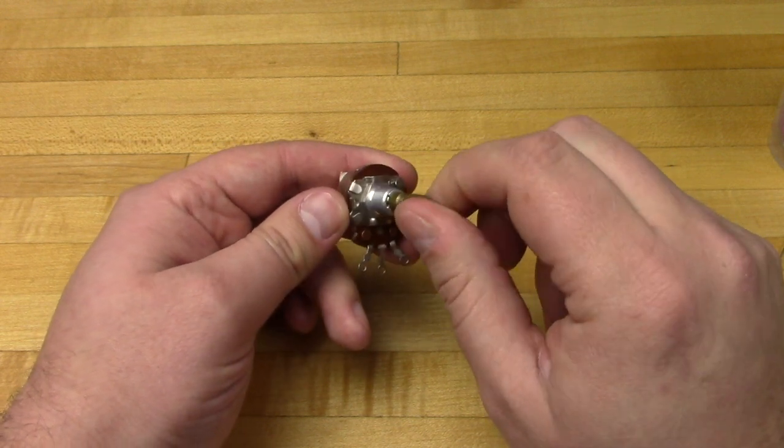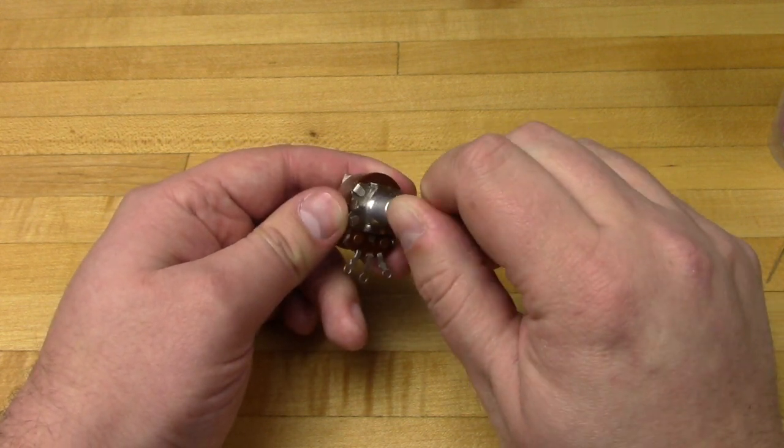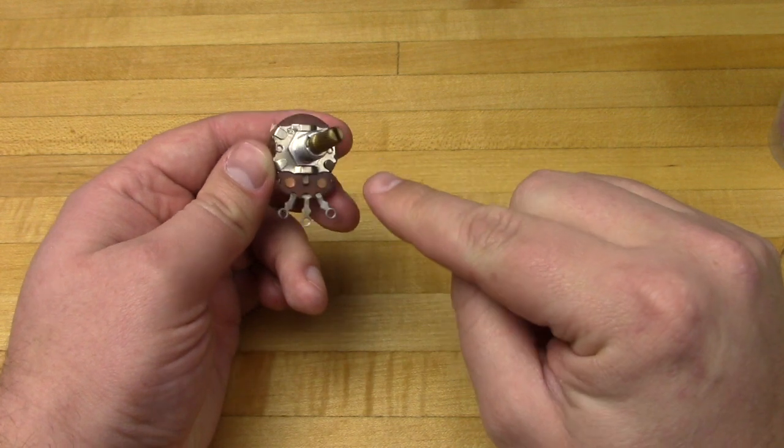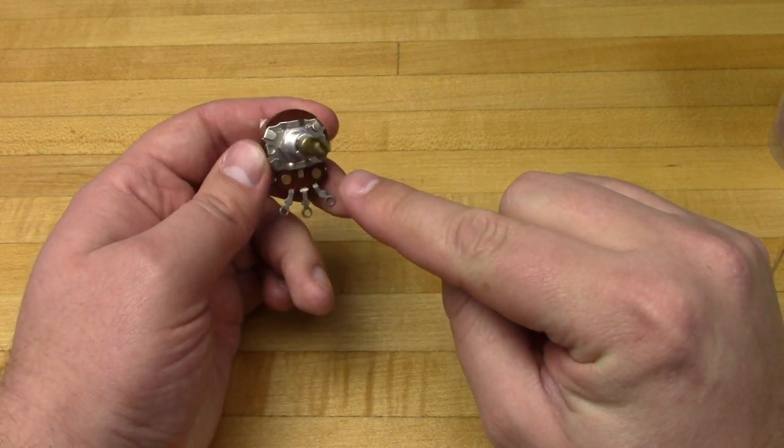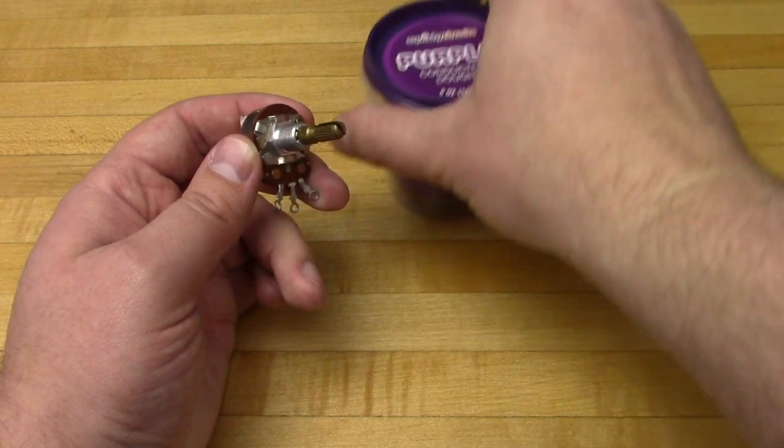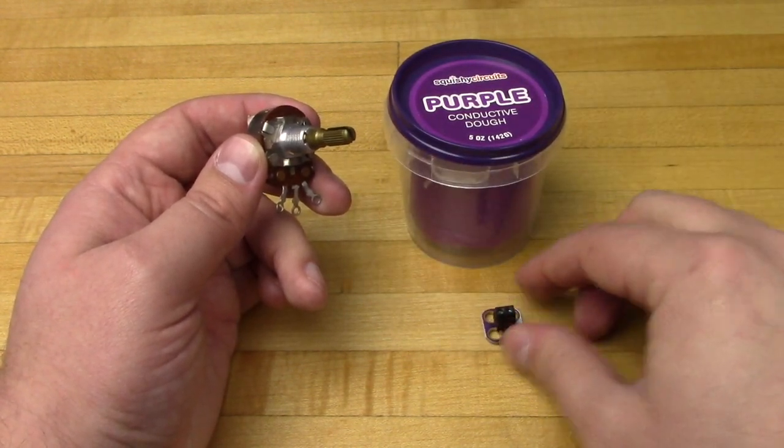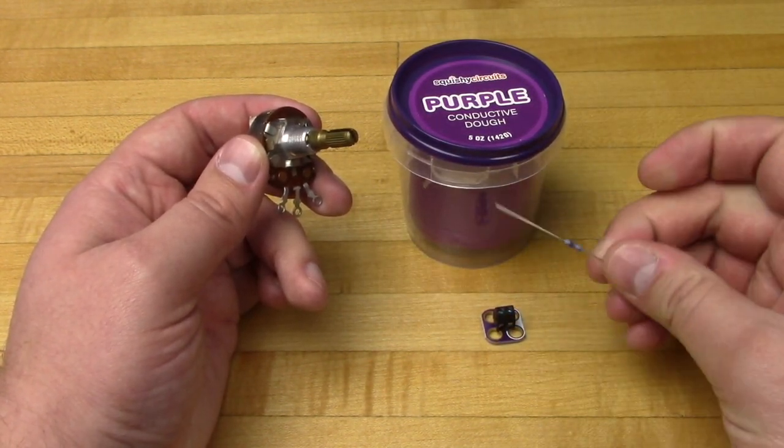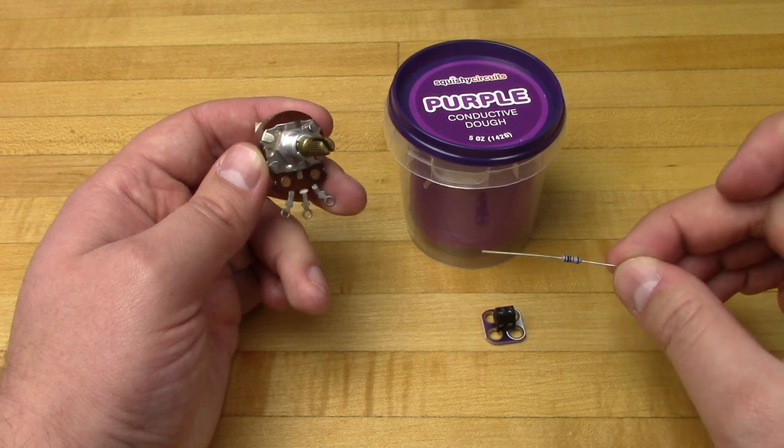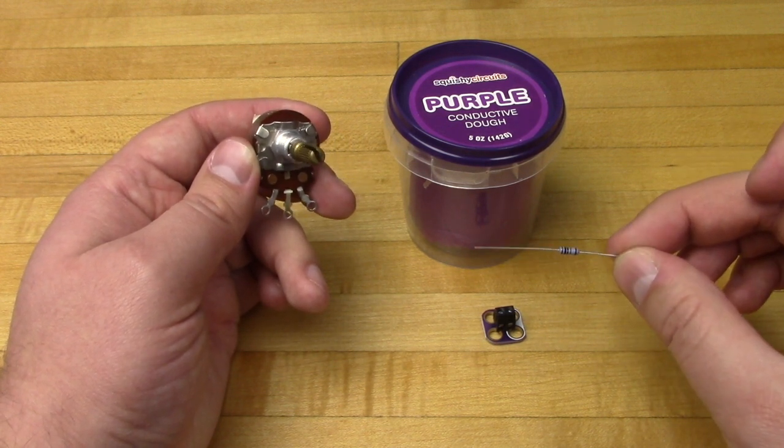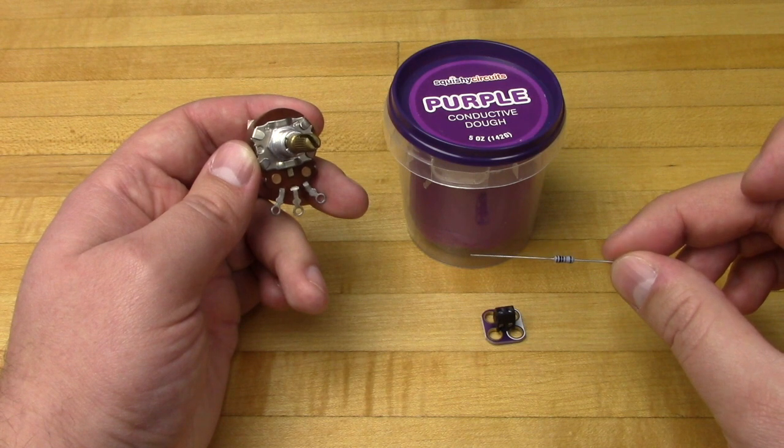Typically in a project such as this, you'd use a simple variable resistor to control the sound coming out of the piezo speaker. Instead, we're going to make the exact same thing, but we'll be using some squishy circuits dough and a resistor as well as a screw terminal just to make things really easy. But essentially we're turning these items into our own fun-filled, squishy, manipulative variable resistor.